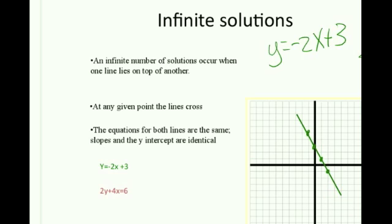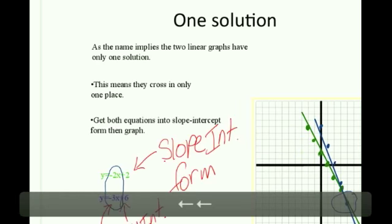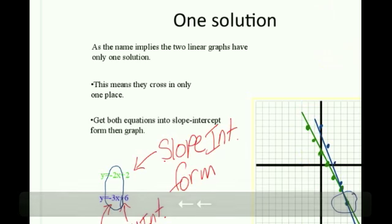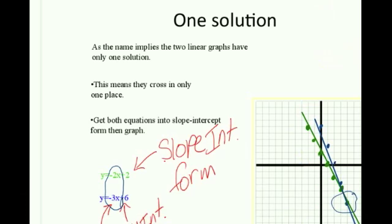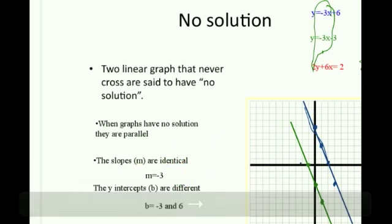So, just a quick review. When we have only one solution, slopes are different. When we have no solution, when we have parallel lines, there is no solution. That's because the slopes are identical and these lines never cross.